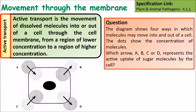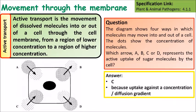A question that we might be asked: the diagram shows four ways in which molecules may move into or out of a cell. The dots show the concentration of molecules. Which arrow — A, B, C or D — represents active uptake of sugar molecules into a cell? Pause the video, have a think about it, then look at the answer. The answer is C, because the uptake is against the concentration gradient — it's going from an area of lower concentration to an area of higher concentration.